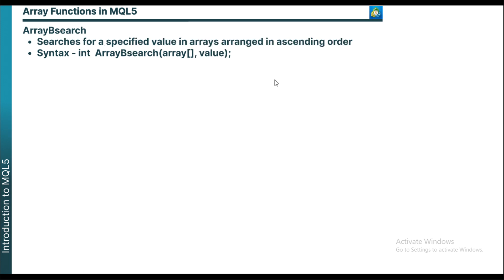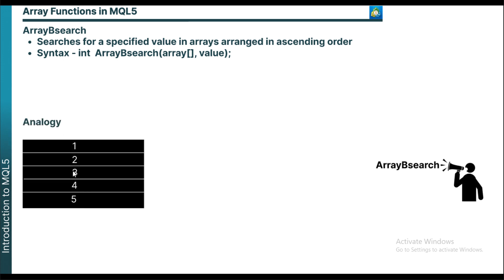The next function is ArrayBsearch. ArrayBsearch is used to search for a specific value in your array. What it does is return the index of the found value. The return value is always int, and it only has two parameters: the identifier, and the value you want to search for. Using analogy, imagine you have an array with five numbers and you want to look for a particular number — in this case, let's say 4. Once you use ArrayBsearch, it will tell you that the number you are looking for is at index 3 of the array.